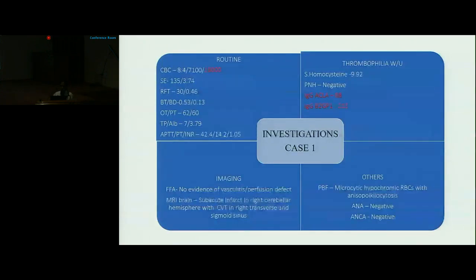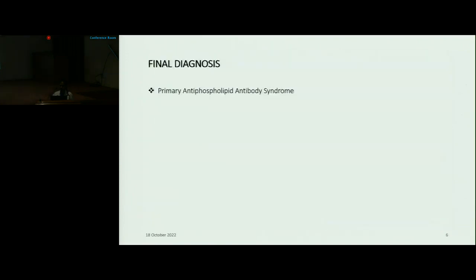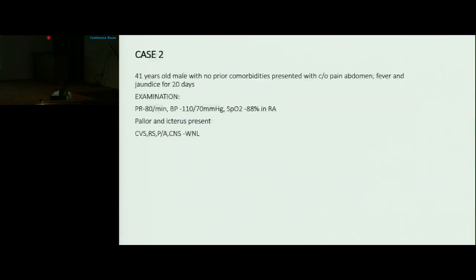Routine investigations showed anemia and thrombocytopenia; rest of the investigations were normal. In view of a young female with recurrent thrombosis, possibility of APLA was kept, and the workup was sent, which came out positive in high titers. The primary diagnosis was made as primary antiphospholipid antibody syndrome, as she was negative for ANA and ANCA.